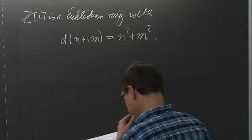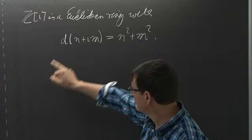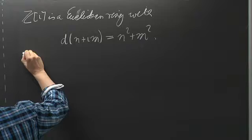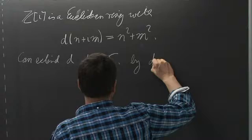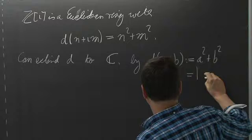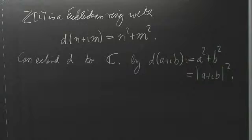With d(n + mi) equal to n squared plus m squared. This is just the restriction to the Gaussian integers of the square of the complex absolute value. We can extend d to all of C by setting d(a + ib) equal to a squared plus b squared.